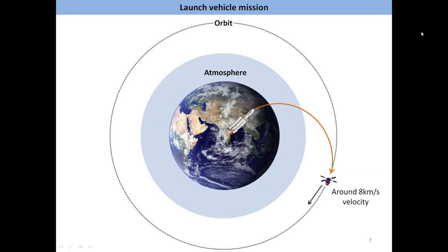In a launch vehicle mission, after it lifts off from Earth and before it reaches an orbit, it has to pass through the Earth's atmosphere. When the mission is completed, the object delivered into orbit has a very high speed. If you consider an orbit that is 200 kilometers above Earth's surface, then this speed is around 8 kilometers per second. With such a high speed, we will be able to travel from Trivandrum to Kasaragod in one minute.